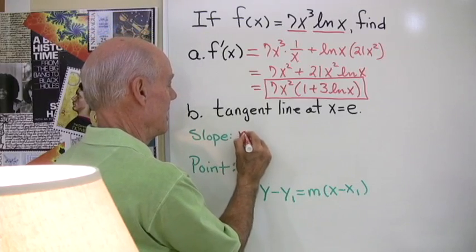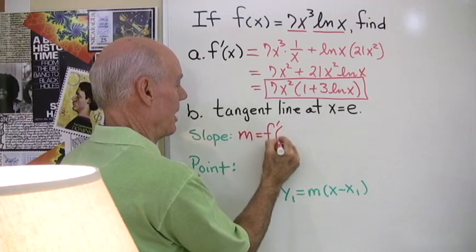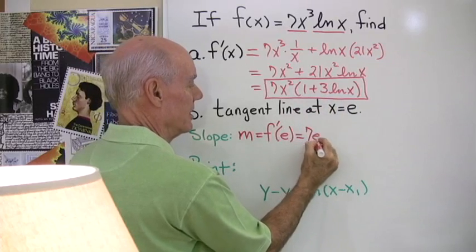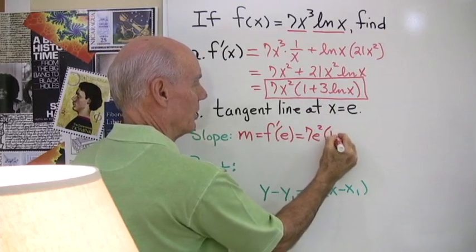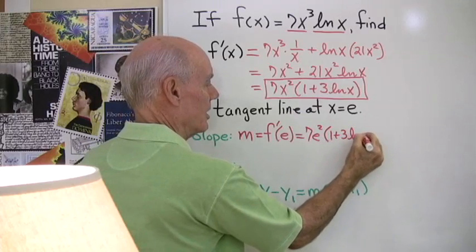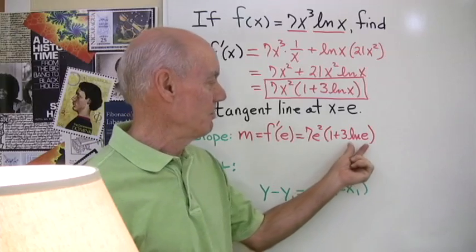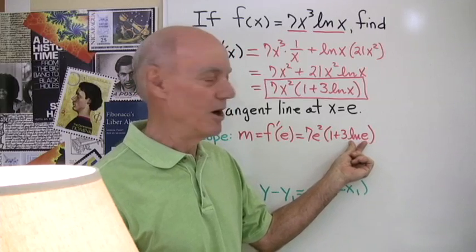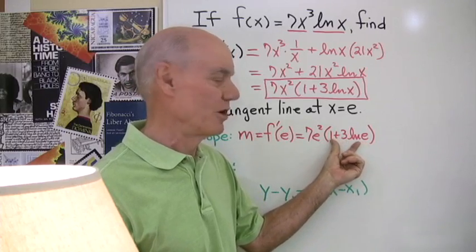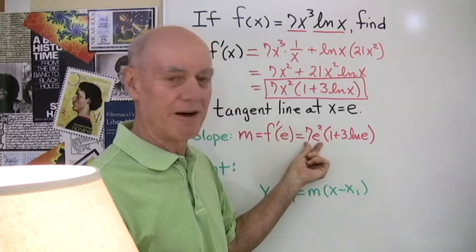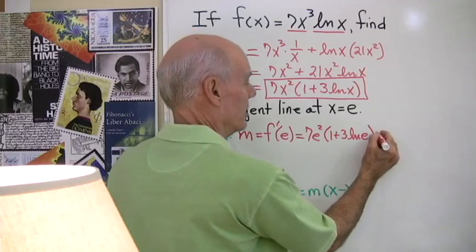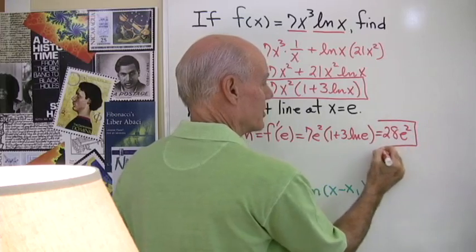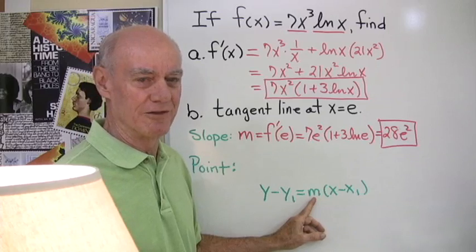So first of all the slope is just the derivative evaluated at x equal to e. So in that case m the slope is f'(e). So I'll substitute e into this expression 7e² times 1 + 3ln(e) and now I can simplify because I know that the natural log of e is just the number 1. So this is the number 1 times 3 is 3 plus 1 is 4. So 4 times 7e² is going to be 28e². So there's my slope and that's going to go right here in the equation of this line.